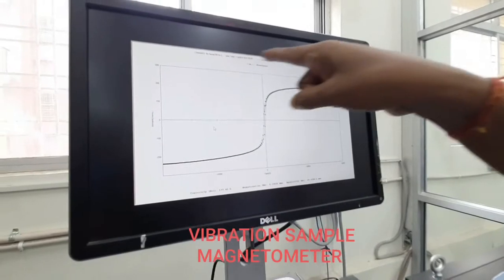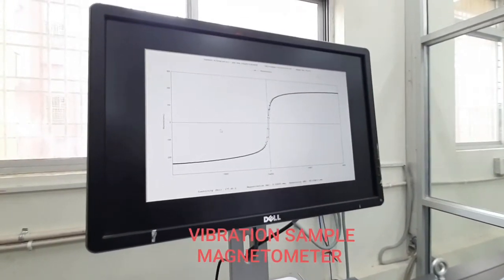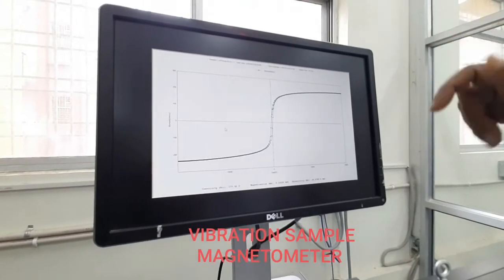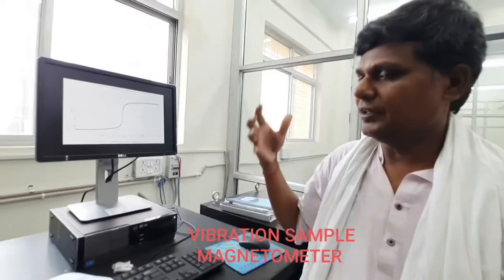Thus from this measurement we found this is the cursivity, retentivity, magnetization curve, and these magnetic parameters are very important materials for various technological activation.